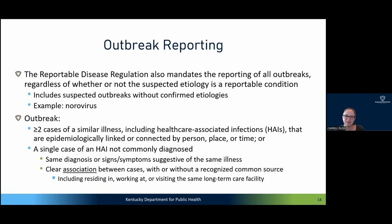Briefly on outbreak reporting: all outbreaks are reportable in Kentucky, regardless of whether or not the suspected etiology is a reportable condition. So if you have several cases of a GI illness in a long-term care facility, even without a definite etiology, that would be a reportable outbreak. The regulation defines an outbreak as two or more cases of a similar illness, including healthcare-associated infections, that are epidemiologically linked by person, place, or time, or a single case of an HAI not commonly diagnosed, with the same diagnosis or signs and symptoms suggesting the same illness and a clear association between cases.